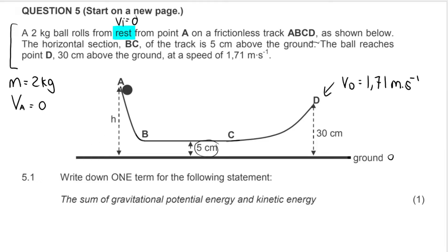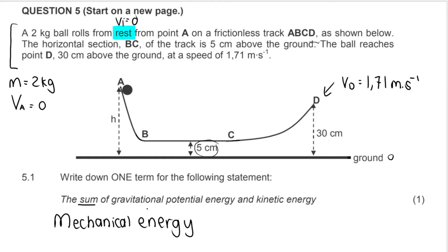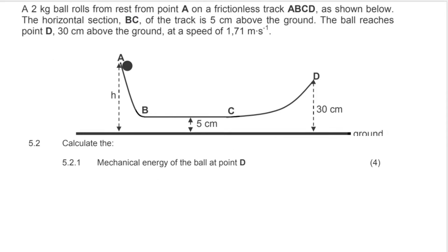The first question is a definition: write down one term for 'the sum of gravitational potential energy and kinetic energy.' You should know that is mechanical energy. In your exams they can ask it backwards — define 'mechanical energy' — and then you need to give that definition. They follow up by asking us to calculate the mechanical energy at point D.